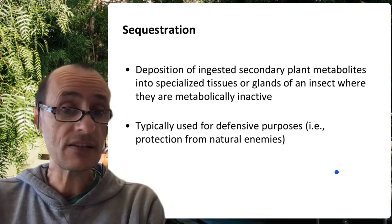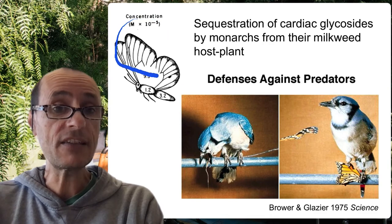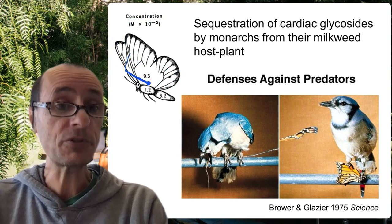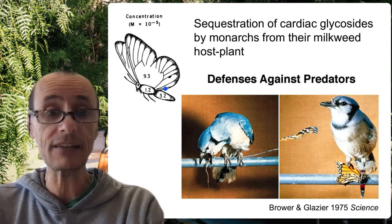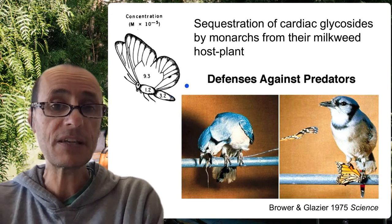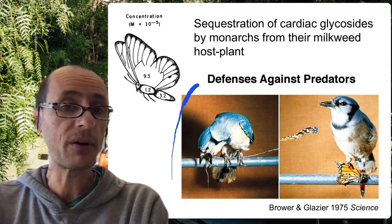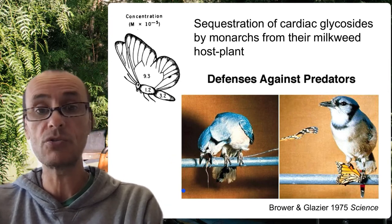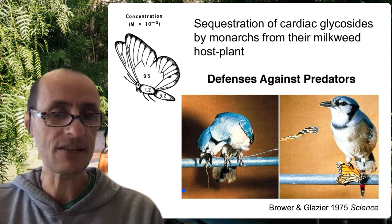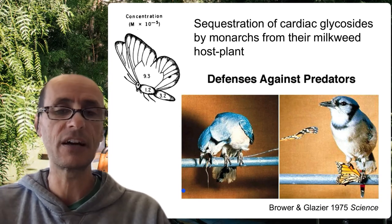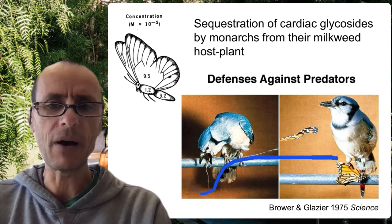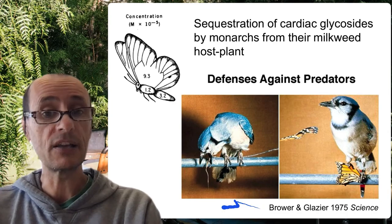The advantage of doing this is that if anything tries to feed on the butterflies, they will encounter these secondary compounds just like the caterpillars did when they were feeding on the plants originally. Vertebrate predators that are sensitive to cardenolides — sometimes called heart poisons because of the effects they have on the neural system — will find them very distasteful, will throw them up, and then will actually learn to avoid them in the future.